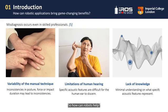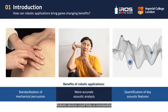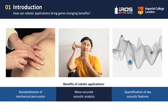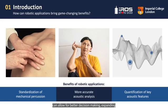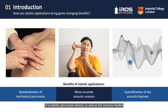So, how can robots help? Robotic devices could help standardize the mechanical percussion action and are able to detect tiny changes in pitch that the human ear cannot perceive. Most importantly, new signal analysis and machine learning techniques can allow for better decision making, expanding our knowledge on percussion models. This project presents the development of a robotic percussion device, as well as the sensory models for the analysis of the tissues' acoustic responses.